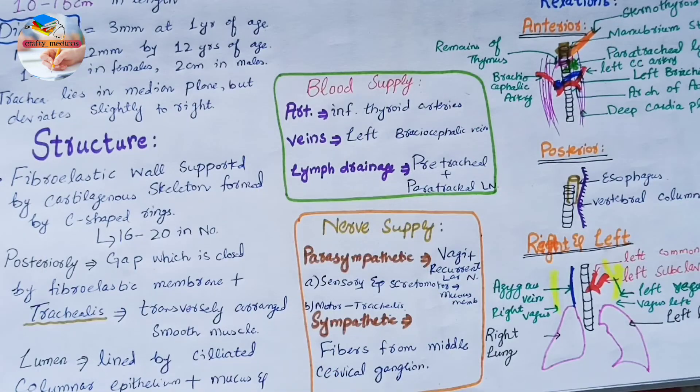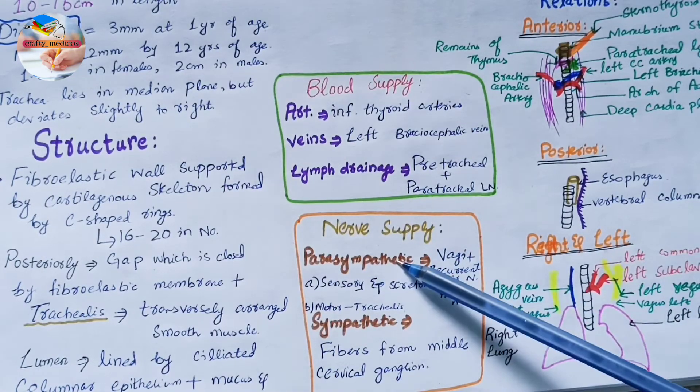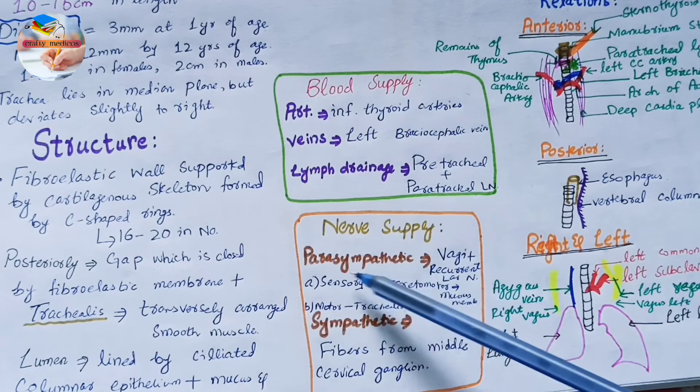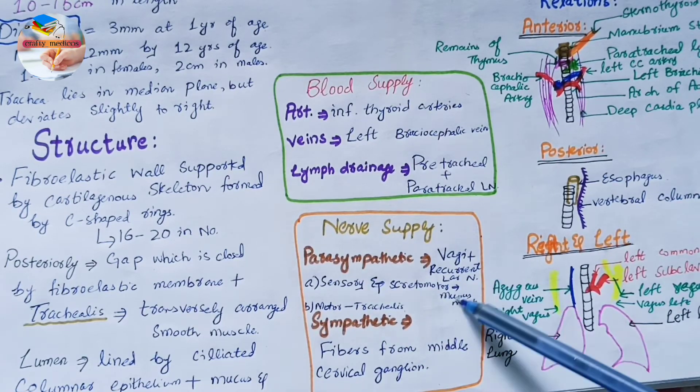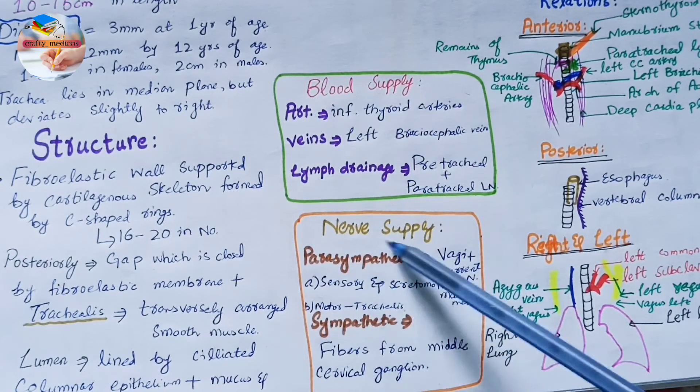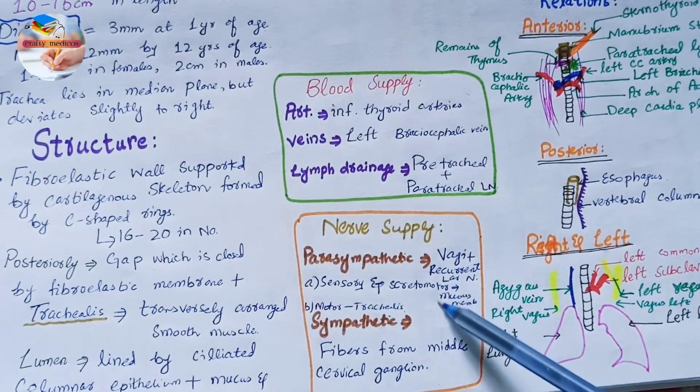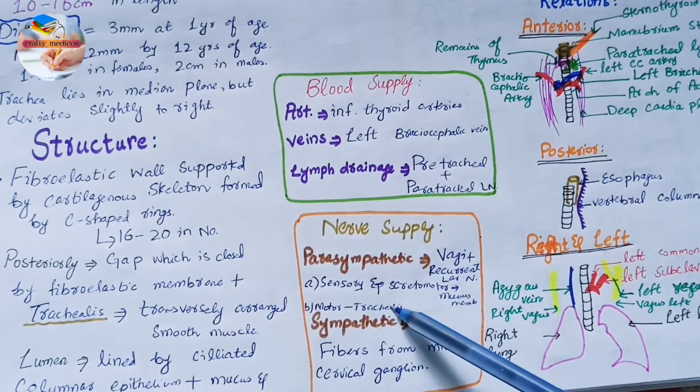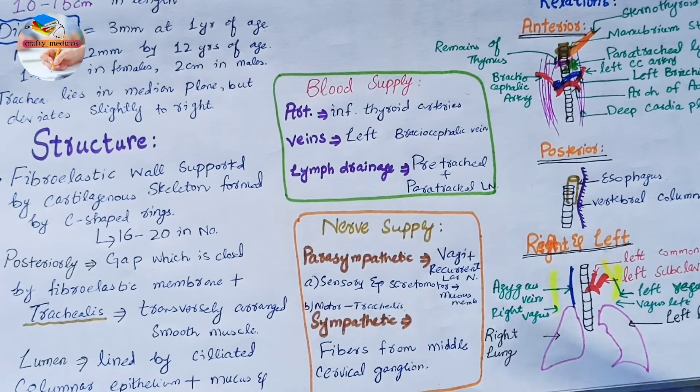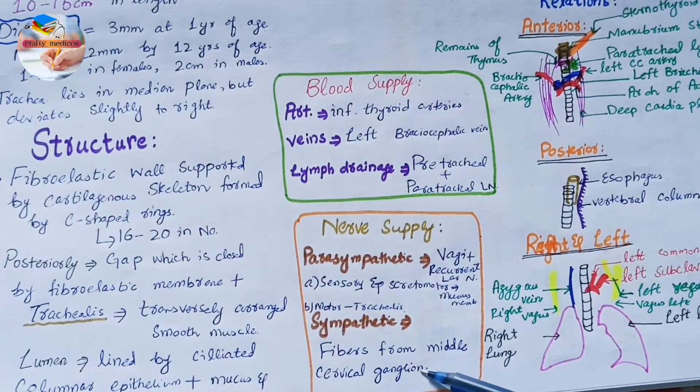The nerve supply of the trachea: it has the parasympathetic nerve supply and sympathetic nerve supply. Parasympathetic nerve supply is through the vagae and recurrent laryngeal nerve. This parasympathetic nerve supply is sensory and secretomotor to the mucous membrane, however it is motor to the trachealis muscle. Sympathetic nerve supply is from the middle cervical ganglion and it is vasomotor.